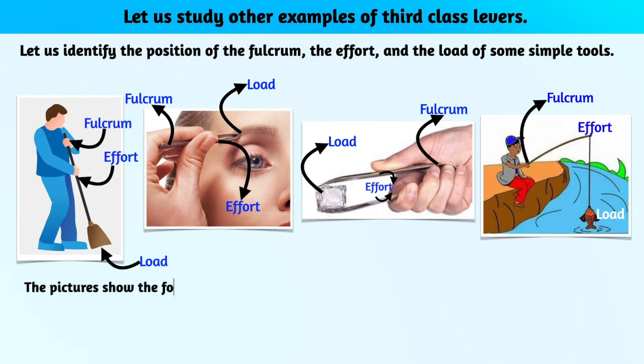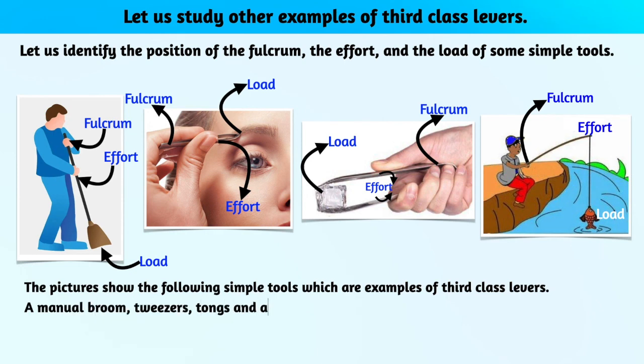The pictures show the following simple tools which are examples of third-class levers: a manual broom, tweezers, tongs, and a fishing rod. The effort is between the load and the fulcrum.